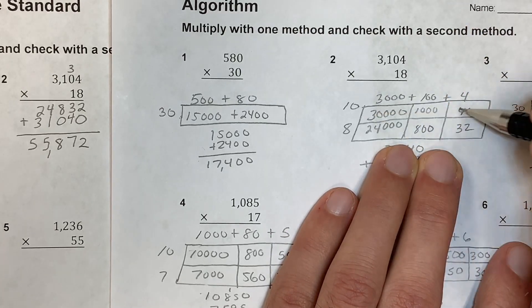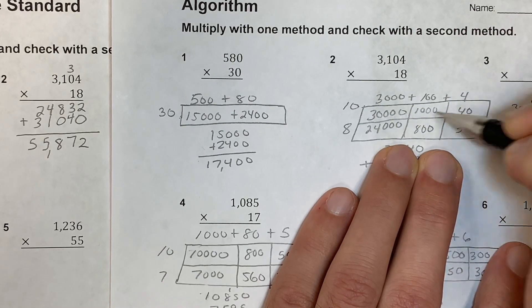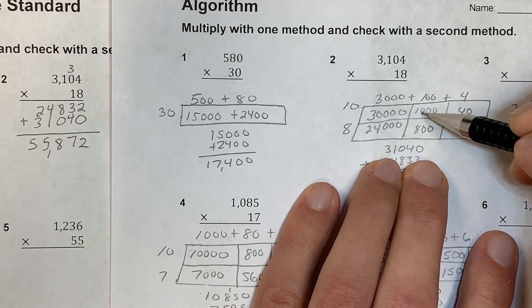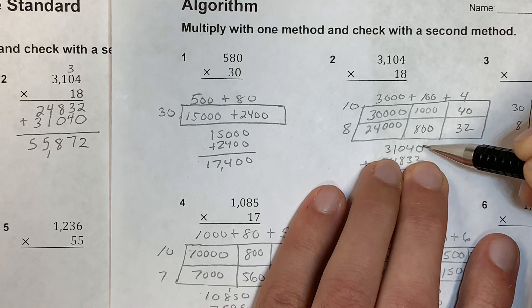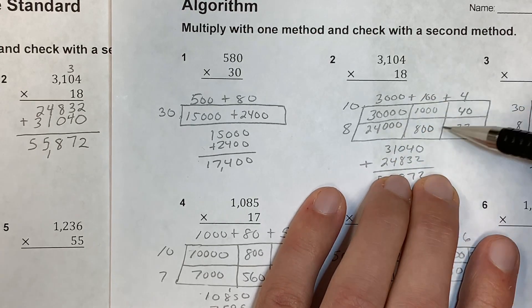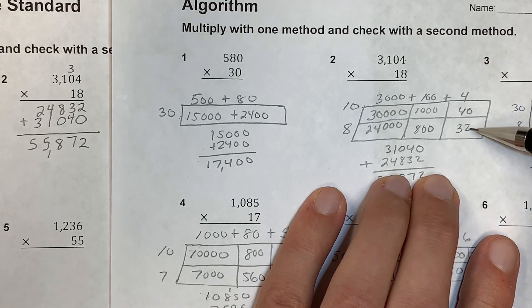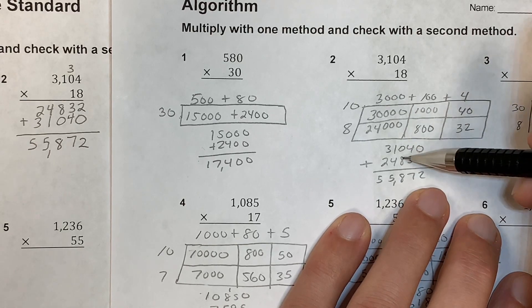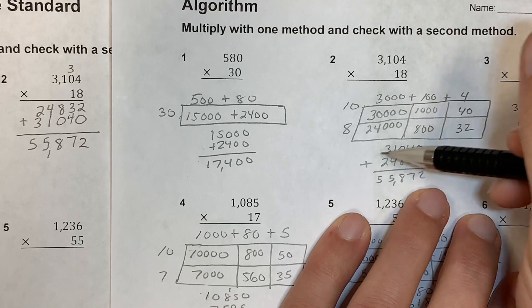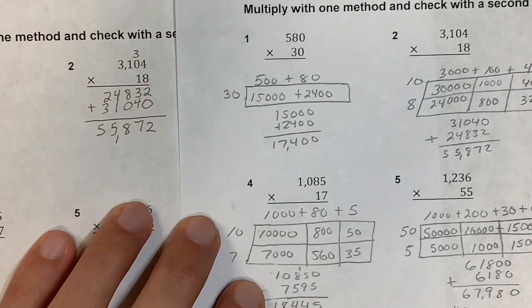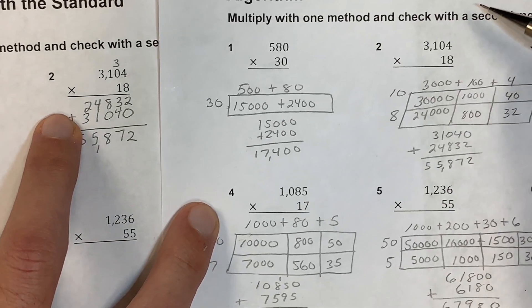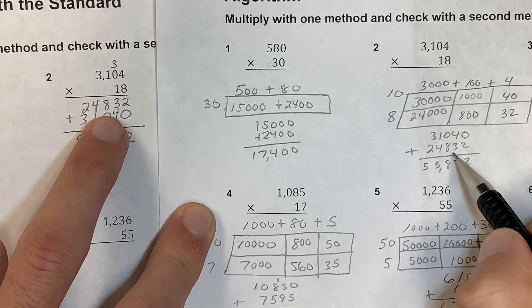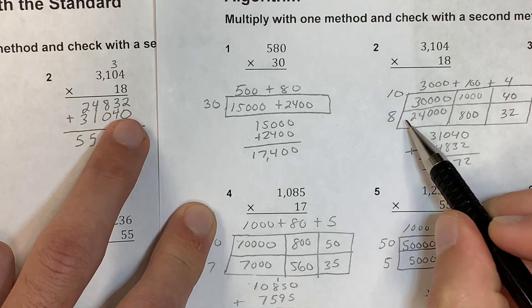I added the numbers across the top: 30,000 plus 1,000 plus 40 gives 31,040. Then the bottom row: 24,000 plus 800 plus 32. Adding everything: 2 plus 0 is 2, 4 plus 3 is 7, 0 plus 8 is 8, 4 plus 1 is 5, 2 plus 3 is 5. The 8 times the top number gives 24,832 — the same result as in the standard algorithm.